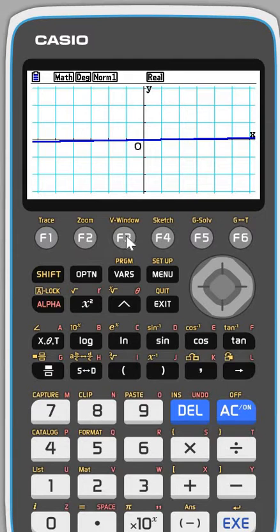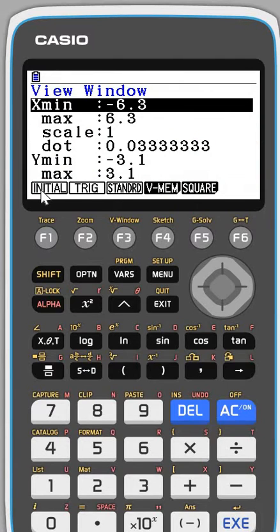But let's have a look at view window, so F3. And at the bottom, you can see that one of the options is trig, so you can see that's going from minus 540 up to 540 in steps of 90 degrees.